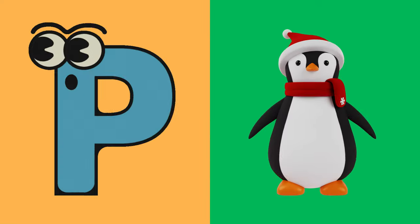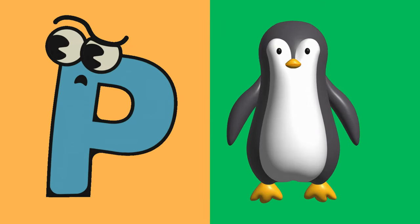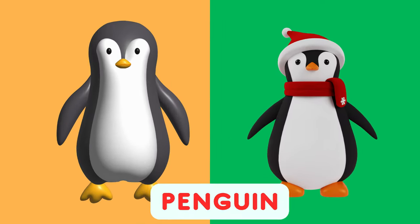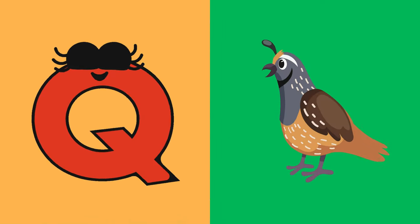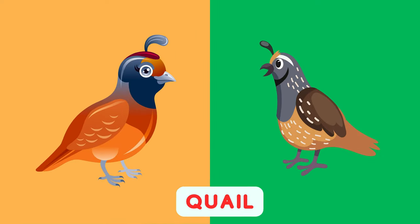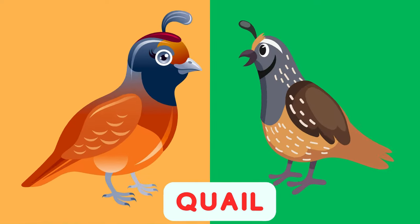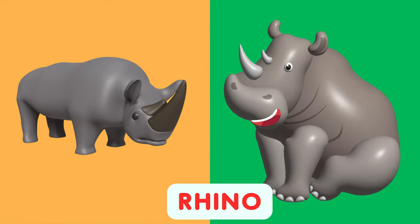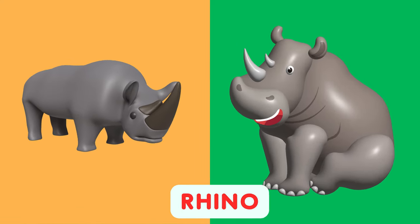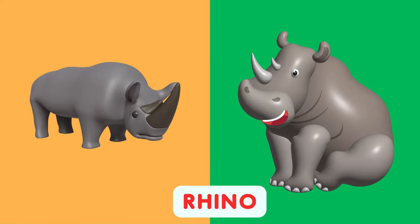P is for Penguin, P, P, Penguin. P is for Penguin, P, P, P. Q is for Quail, Q, W, Q. Q is for Quail, Q, W, Q, W. R is for Rhino, R, R, Rhino. R is for Rhino, R, R, R.